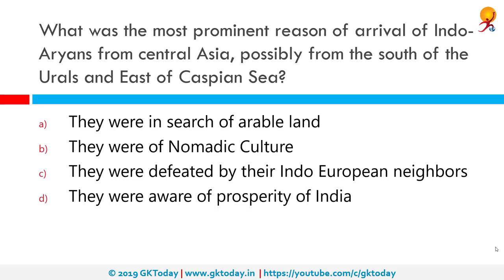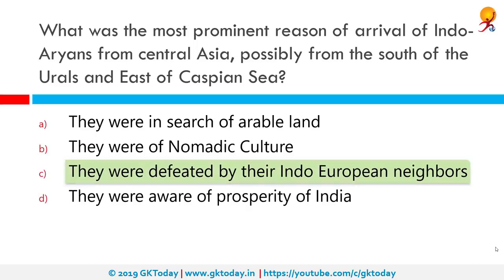What was the most prominent reason for the arrival of Indo-Aryans from Central Asia, possibly from south of the Urals and east of the Caspian Sea? They arrived because they were defeated by their Indo-European neighbours. Indo-Aryan migration models discuss scenarios around the theory of origin from outside the Indian subcontinent of Indo-Aryan people, an ethno-linguistic group that spoke Indo-Aryan languages predominant in North India.